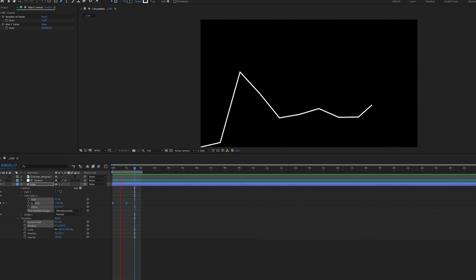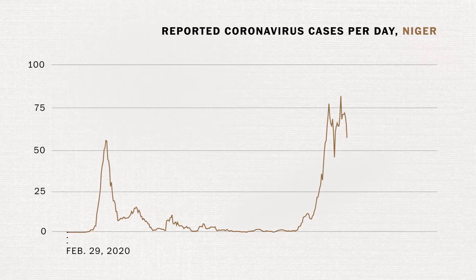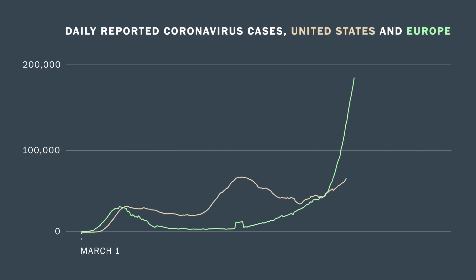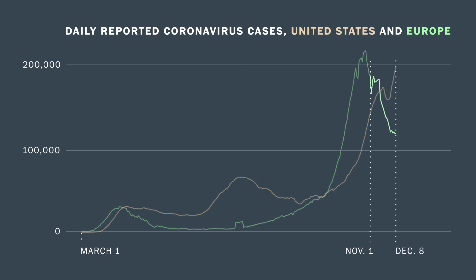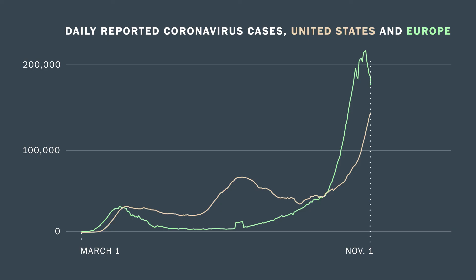Once you've created your line, you can nest this comp in another comp and expand your graph. The top of the comp will be whatever Y value you've set your slider to. An easy tip is to put a solid behind your line while building the graph, then remove it to confirm the top is in the right place. Be aware that larger datasets will bog down After Effects. This is the simplest, most flexible approach I've found — if you have a better way, leave a comment below.